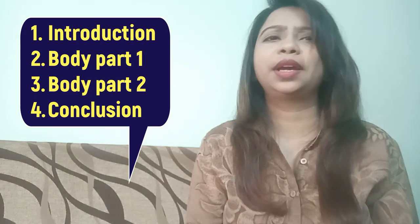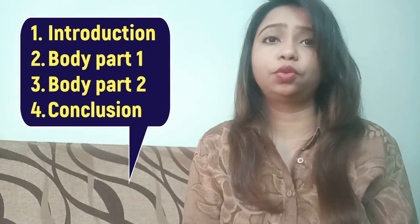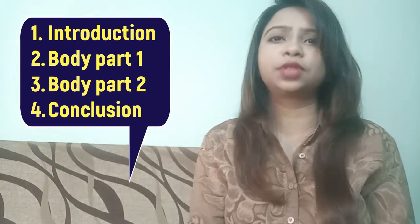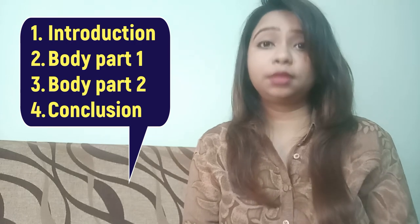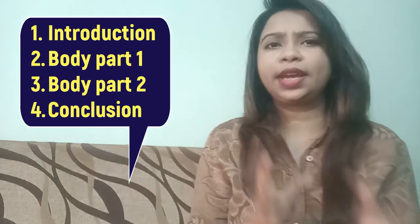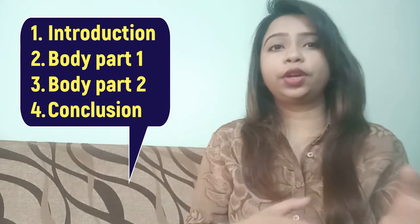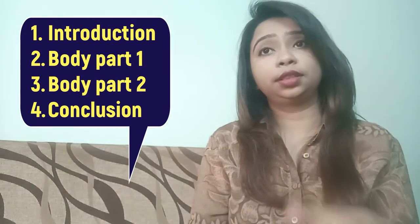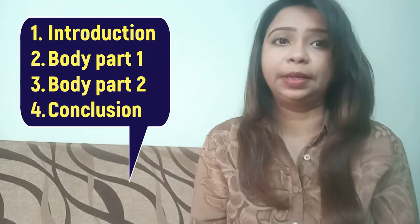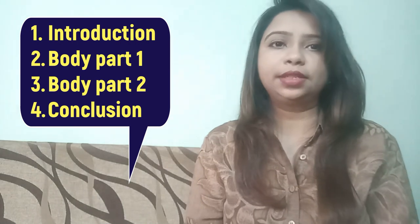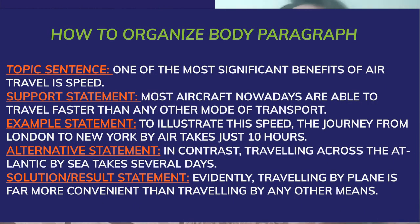In the body paragraphs, do not write more than four to five sentences. These sentences should consist of: first, a topic sentence introducing the idea; second, a support statement elaborating on it; third, an example to illustrate the idea; fourth, an alternative statement suggesting another perspective; and finally, a solution suggesting how to solve the problem. An example is provided to show how to place these five sentences correctly.